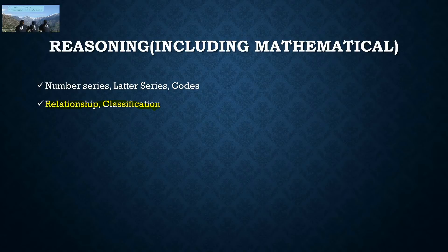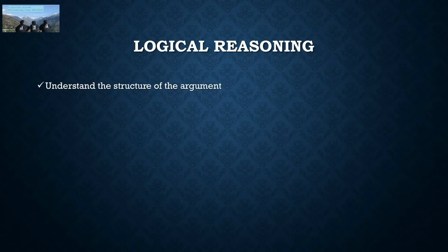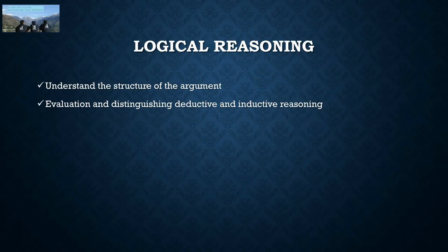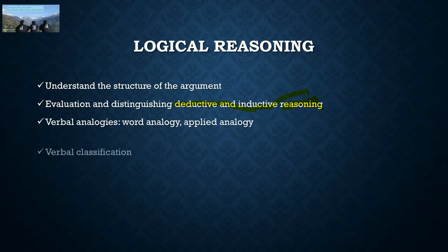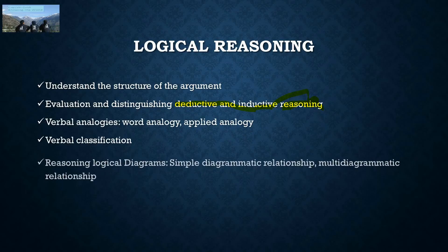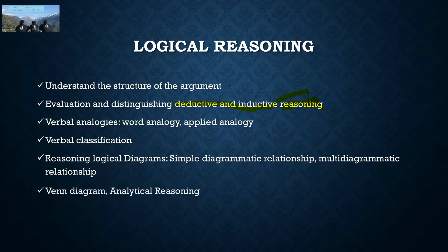If you want to buy it, you should buy it because it is under copyright. It is between 300 to 400 rupees. In logical reasoning, it includes understanding the structure of any argument, evaluation and distinguishing deductive and inductive reasoning. It's easy, basically, along with verbal and nonverbal logical reasoning diagrams which includes simple diagrammatic relationships, multi-diagrammatic relationships, Venn diagrams, and analytical reasoning.